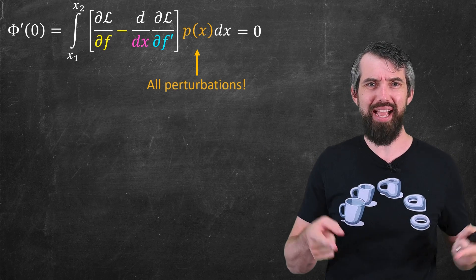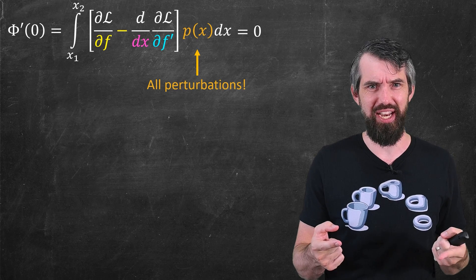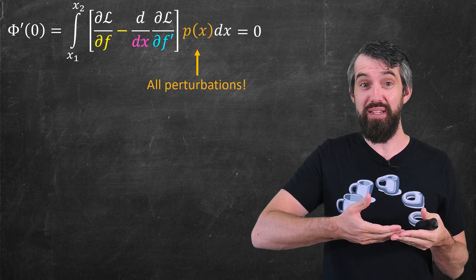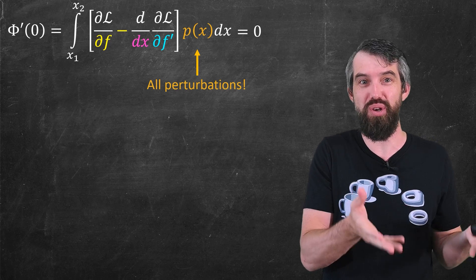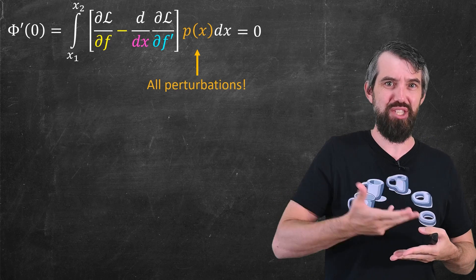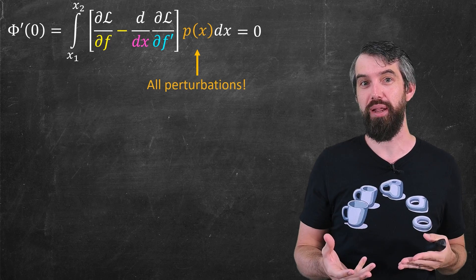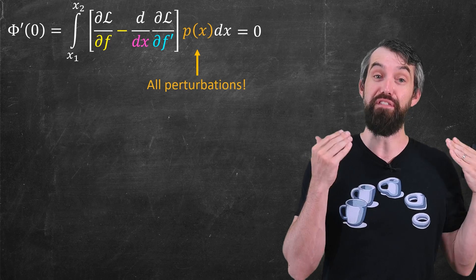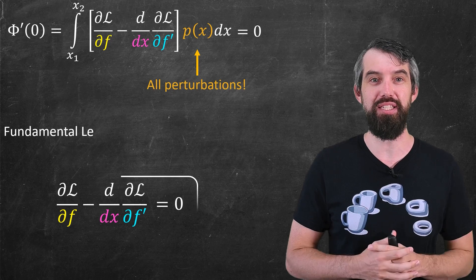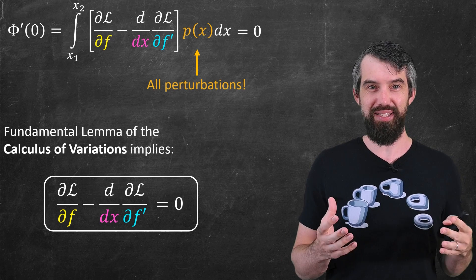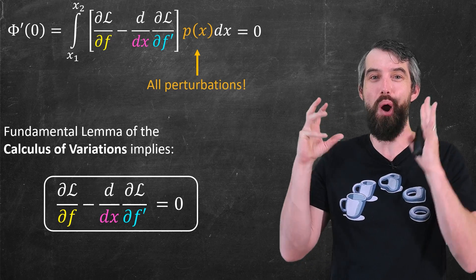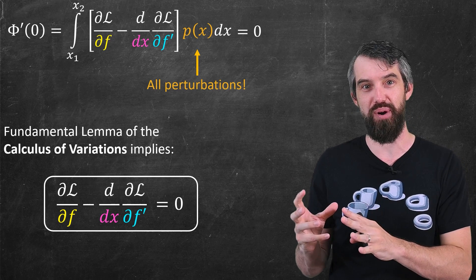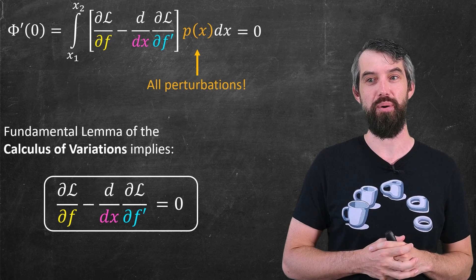But how could we ensure that this integral always is zero for every p(x)? For instance, if the thing in brackets was ever non-zero for a region, a p(x) that was very large for that portion where the stuff in brackets was non-zero would result in this really big spike at that location. And so what we can use is called the fundamental lemma of the calculus of variations. And it says that in this scenario where you have the integral of an expression times an arbitrary p(x), which is always zero, then the expression itself must be zero.